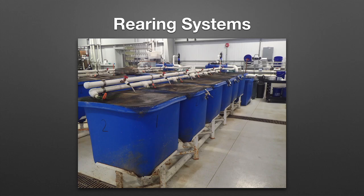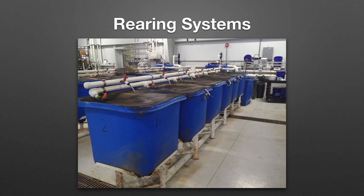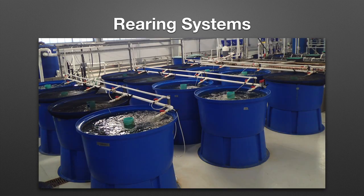After initial feeding we place the fry in a six-tank recirculating aquaculture system, each tank holding 100 gallons. Once the fry reach about 20 grams, we transfer them to a 12-tank recirculating aquaculture system with each tank holding 250 gallons and stocked with about 50 fish per tank.